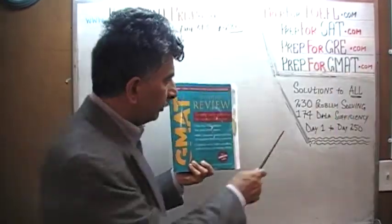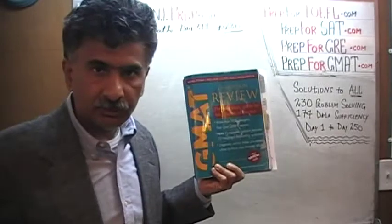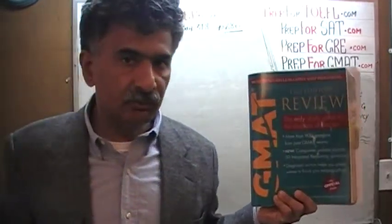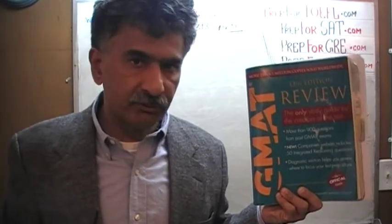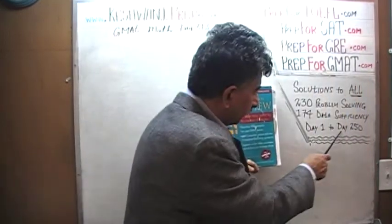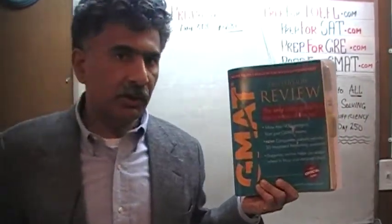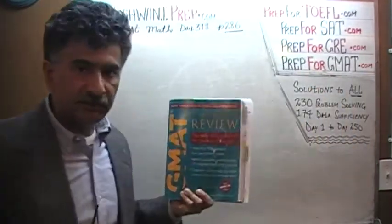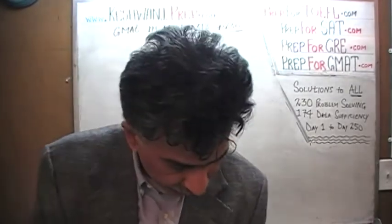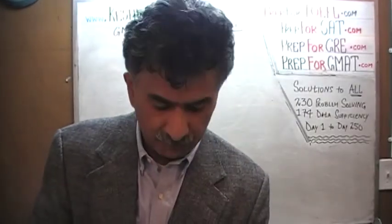The book contains 230 problem solving questions and 174 data sufficiency questions. We have already solved every single math problem from this book. If you are interested in watching any of the original solutions, you will find them from day number 1 through 250. Right now we are redoing the problems and we are on page number 286. Problem number 123 is what we are about to do.